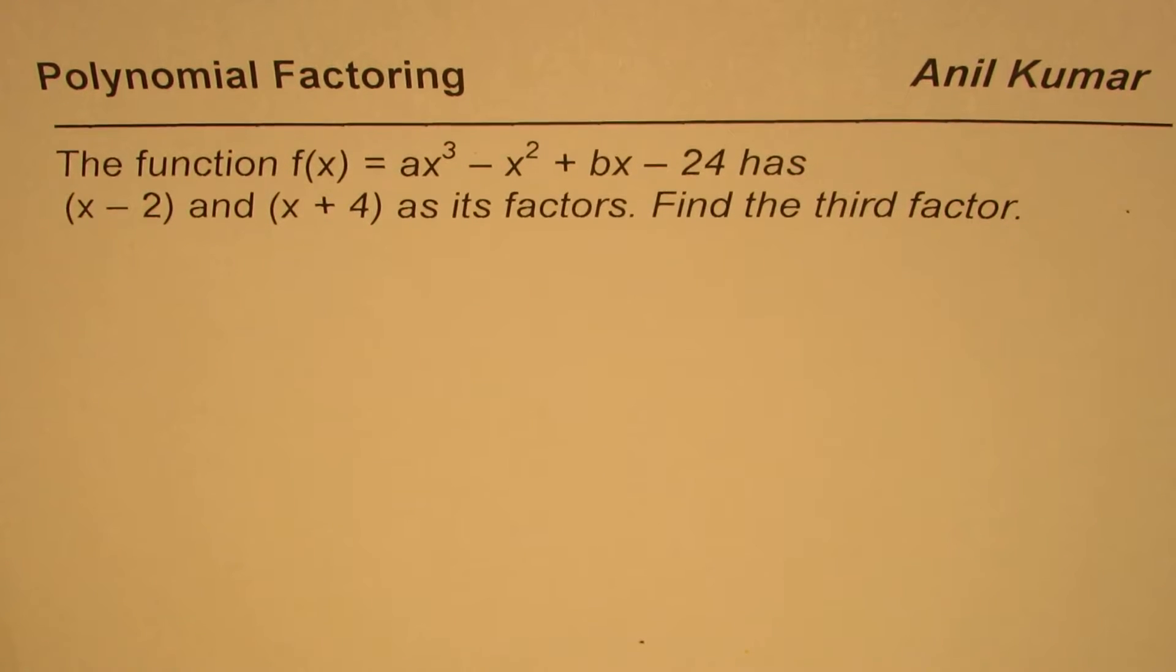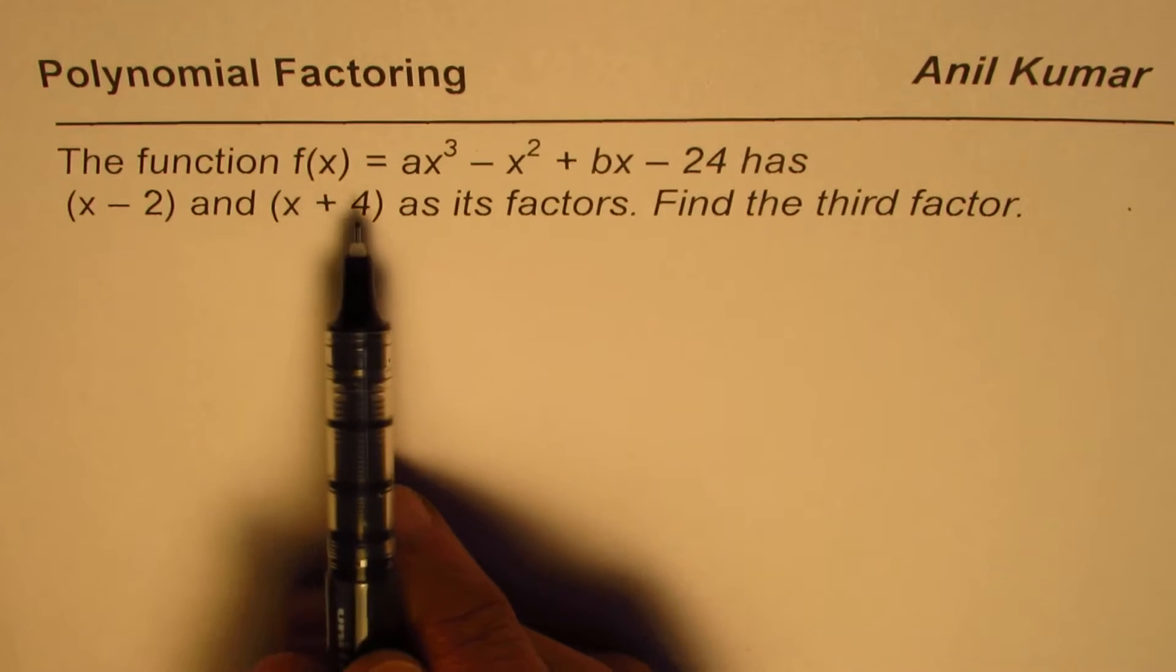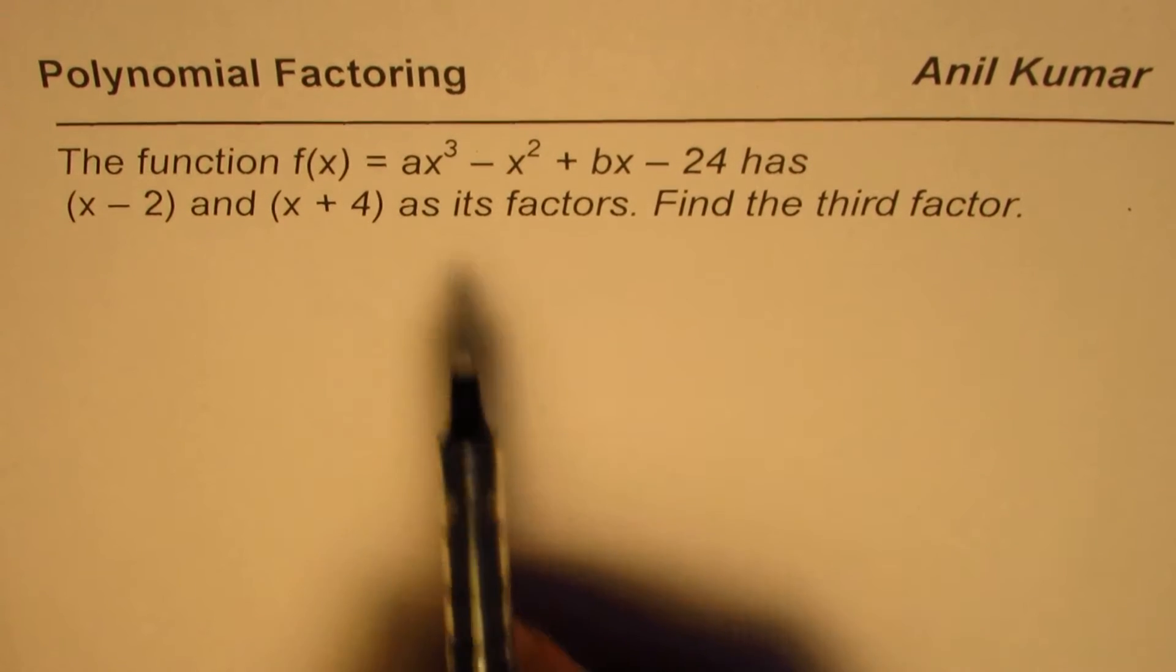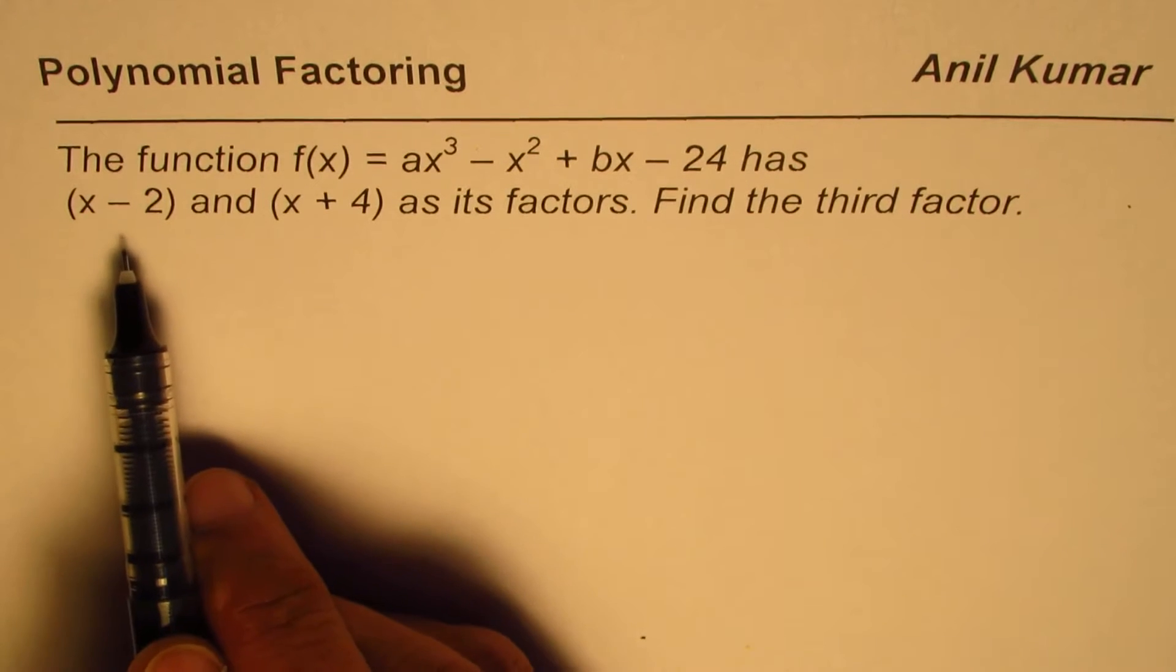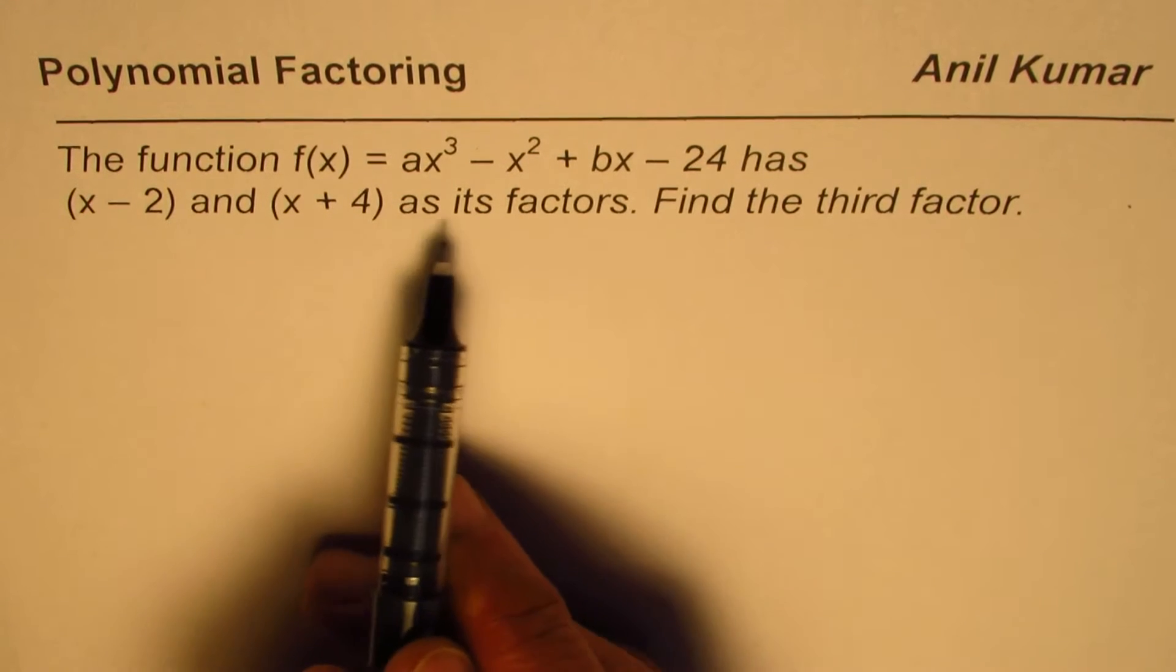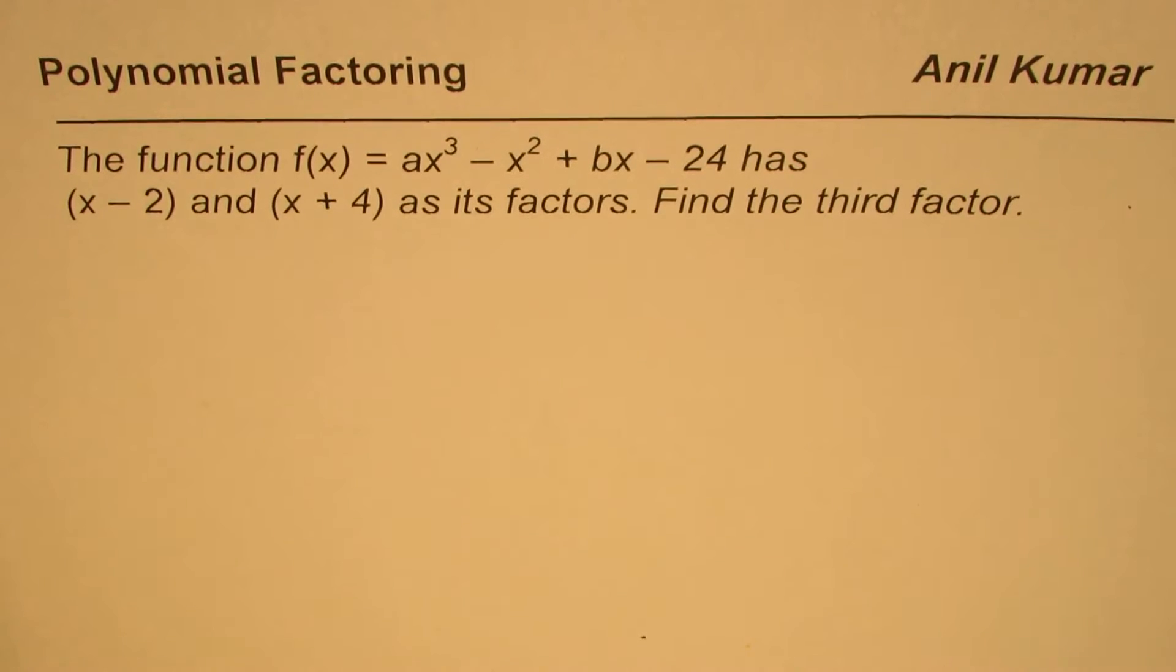I'm Anil Kumar, sharing with you an excellent question from previous test papers. It's on polynomials. The question is: the function f(x) equals ax³ minus x² plus bx minus 24 has x minus 2 and x plus 4 as its factors. Find the third factor.